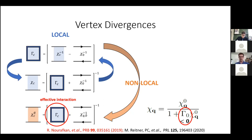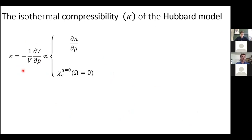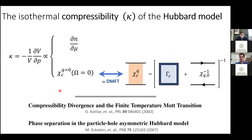The topic of my talk is this enhancement, and to connect it to vertex divergences we will look at the isothermal compressibility of the Hubbard model. Kappa, the isothermal compressibility, can be calculated in two ways: from a one-particle perspective using the derivative of the occupation with respect to the chemical potential, or as the uniform static charge susceptibility. In DMFT this is given by the irreducible vertex. Let me state clearly that how the compressibility behaves close to the Mott transition was studied almost 20 years ago, and we know it shows a divergence close to the Mott transition. Our objective here is to show how this is connected to the vertex divergences.